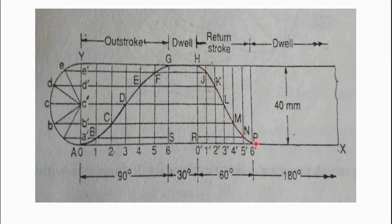For the return stroke, locate points H, J, K, L, M, N, and P in the same manner. Using a French curve, draw a smooth curve through all the located points — A, B, C, D, E, F, G, H, J, K, L, M, and P — to complete the displacement diagram for this problem.